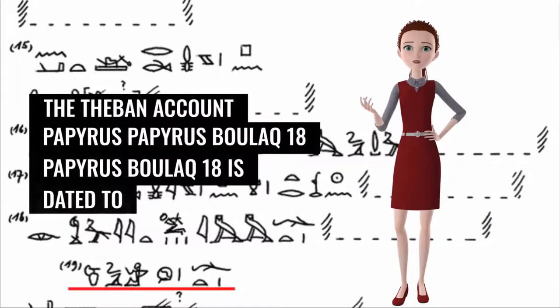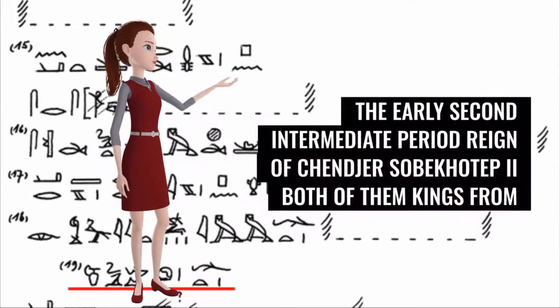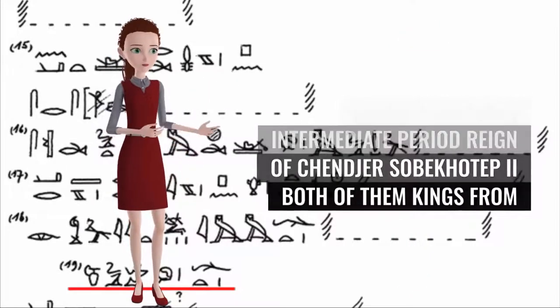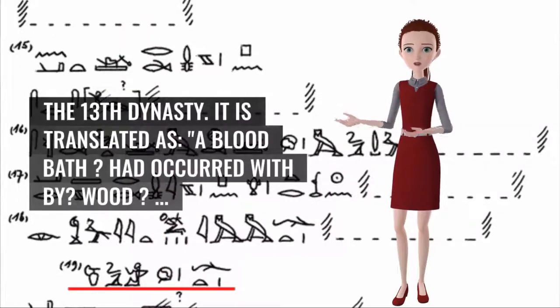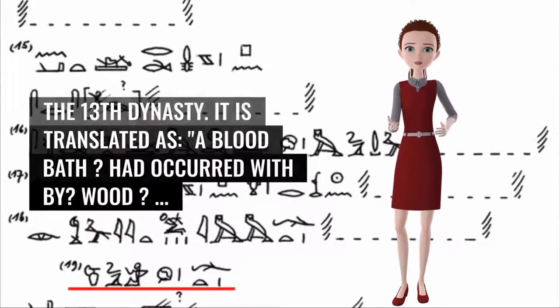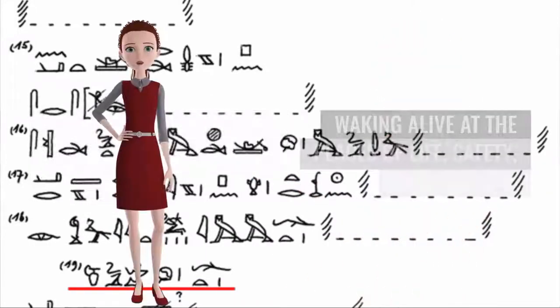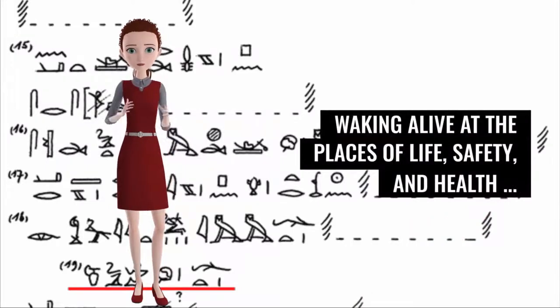Mentioning of impalement in the Theban account papyrus: Papyrus Boak 18 is dated to the early 2nd intermediate period, reign of Khendjer and Sobekhotep II, both of them kings from the 13th dynasty. It is translated as: A bloodbath had occurred with thy wood. The comrade was put on the stake, land near the island, waking alive at the places of life, safety, and health.